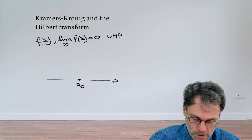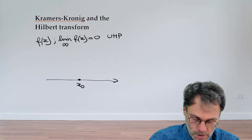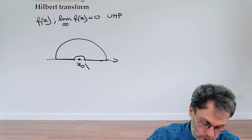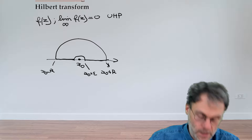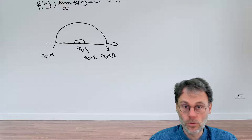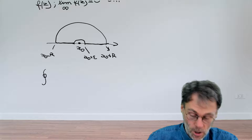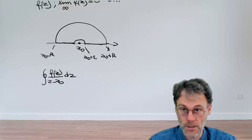Let's focus our attention on a point x₀ on the real axis and look at a contour where we have a small circle with radius epsilon. The point x₀ plus epsilon is shown, the large radius is R, and on the other side we have x₀ minus R and x₀ minus epsilon. We want to calculate the contour integral of f of z divided by z minus x₀, dz.